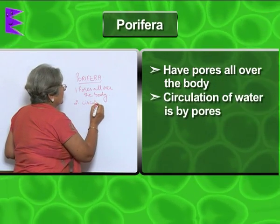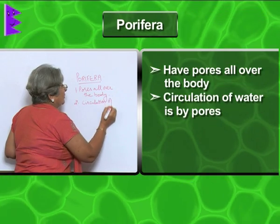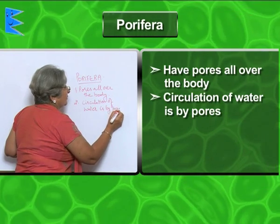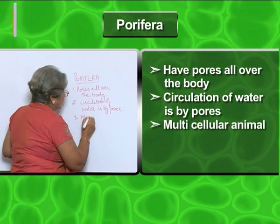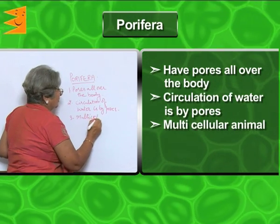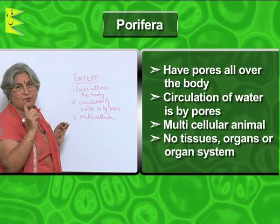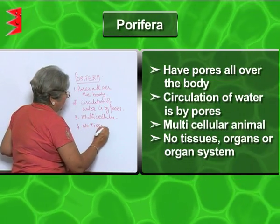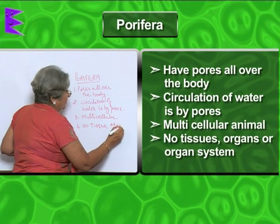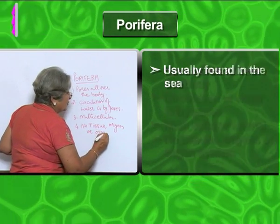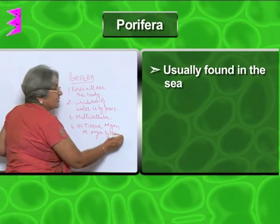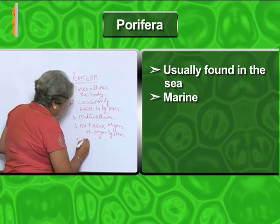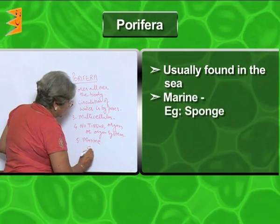Circulation of water is by pores. These animals are multicellular, but have no tissue, organ, or organ system. They are always found in the sea, so they are marine. An example is sponge.